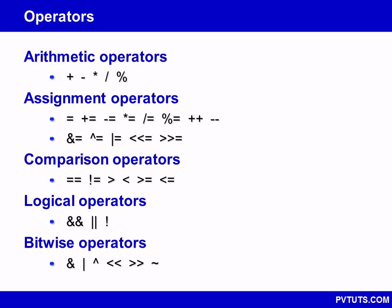Operators are used to operate on values. They can be grouped into five types: arithmetic, assignment, comparison, logical, and bitwise operators.